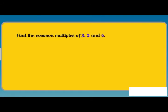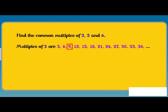Let us take another example. Find the common multiples of 3, 5 and 6. Multiples of 3 are 3, 6, 9, 12, 15, 18, 21, 24, 27, 30, 33, 36 and so on.